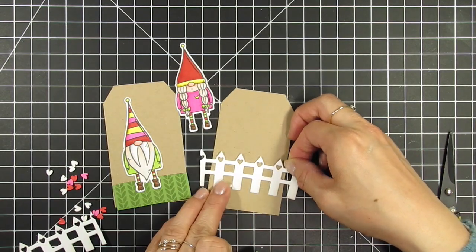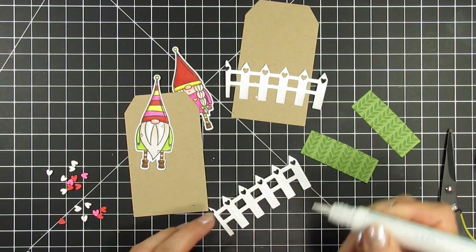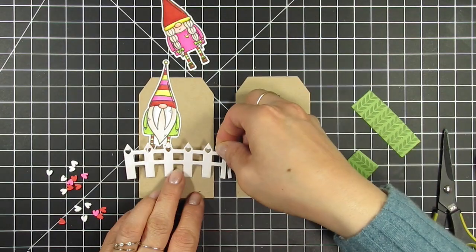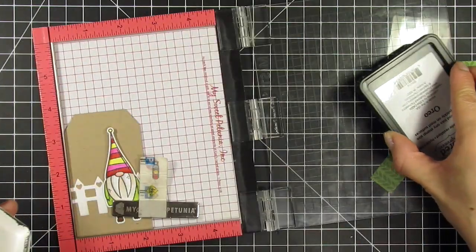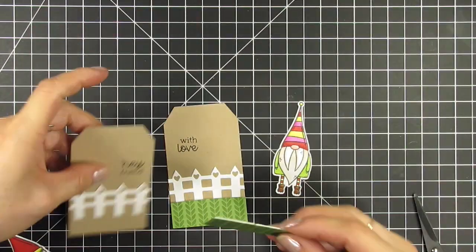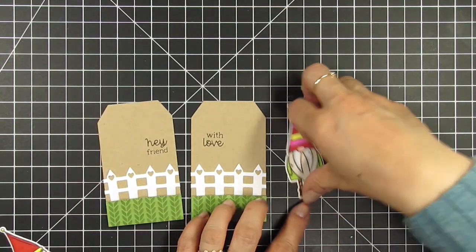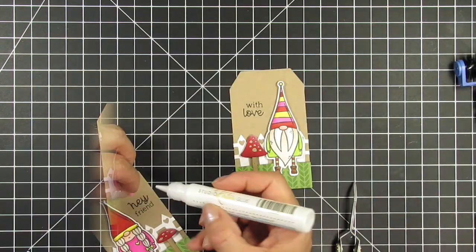Once again, I glue the fence flat onto the tags and pop up the grass panels with foam tape. Then I stamp the Hey Friend and With Love sentiments using Oreo ink. I pop on both the gnomes and mushrooms with a combination of foam tape and micro glue dots. I also add a bright pink candy heart to the girly tag.